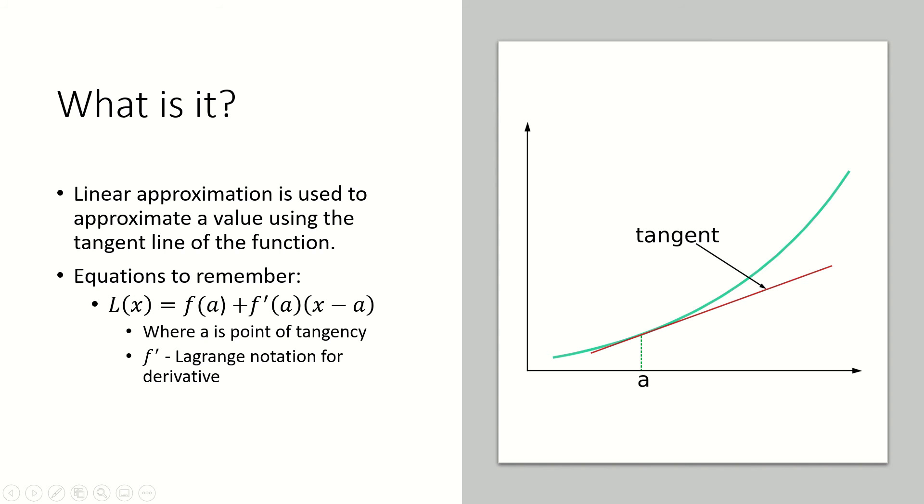You might see dy/dx differentials but that just means the same thing. So here's where a touches the curve, but you're not trying to approximate a, you already know a. You're trying to approximate something on the red line that's not on the green line. So you can see as we get closer to a, the two lines, the approximation is closer, but if we get farther along the error gets bigger.